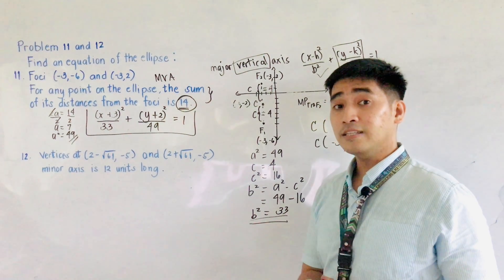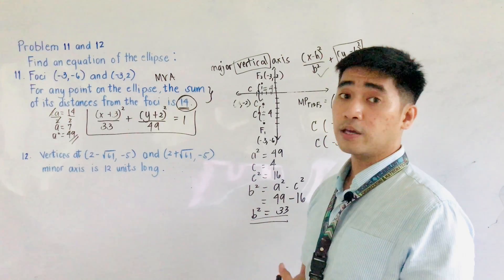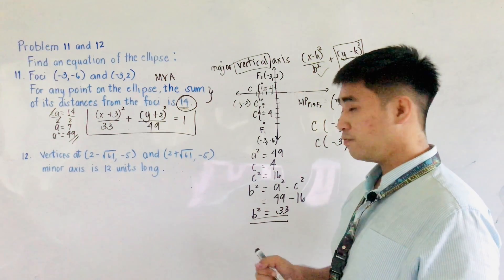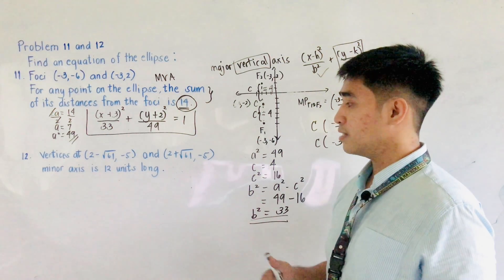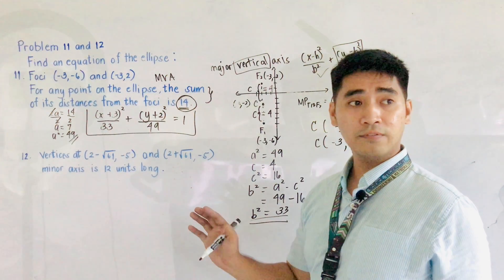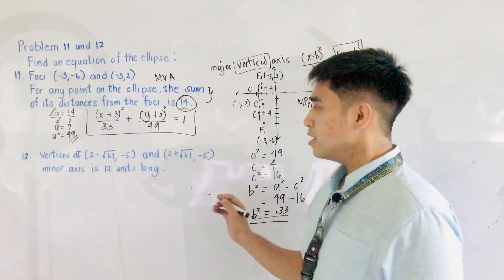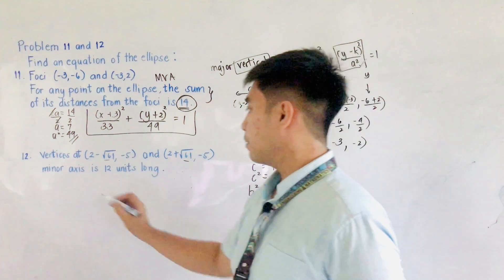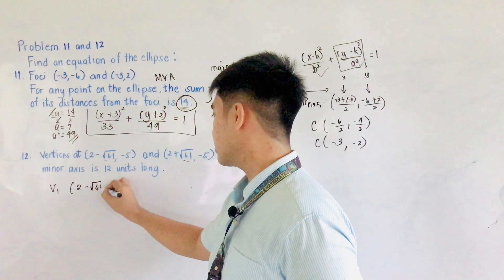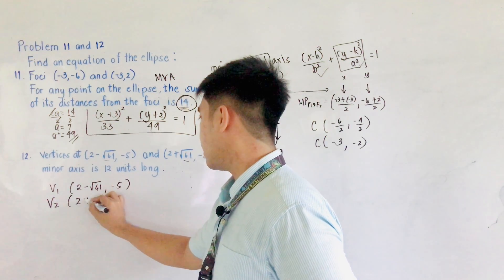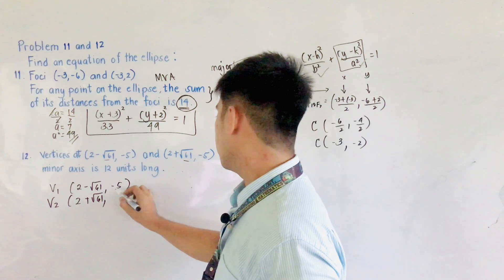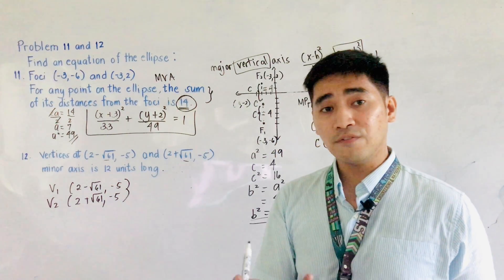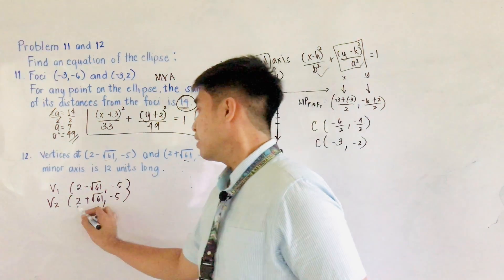We are now ready to answer problem number 12. We are given vertices: V1 is at 2 minus square root of 61, negative 5, and V2 is at 2 plus square root of 61, negative 5. The other condition is that the minor axis is 12 units long. I will use a technique to get the values of A, B, and C when given two points in this form.